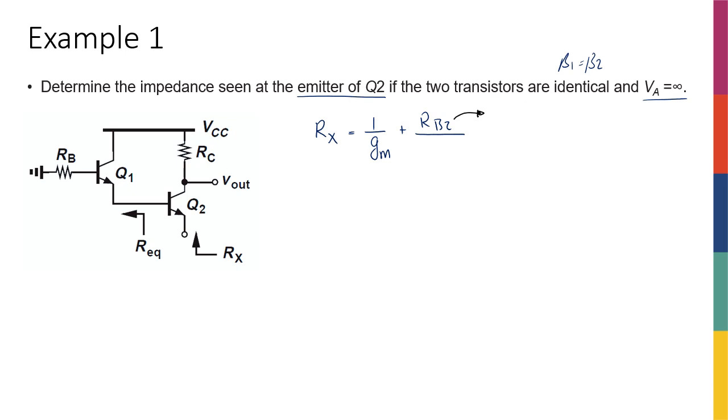So equivalent resistor at the base of Q2, I'm going to call that Rb2. That divided by beta plus 1, right? So that's what I learned. So if I had some resistor in the emitter like Re, it would have been Re plus these two terms, but I don't have that.